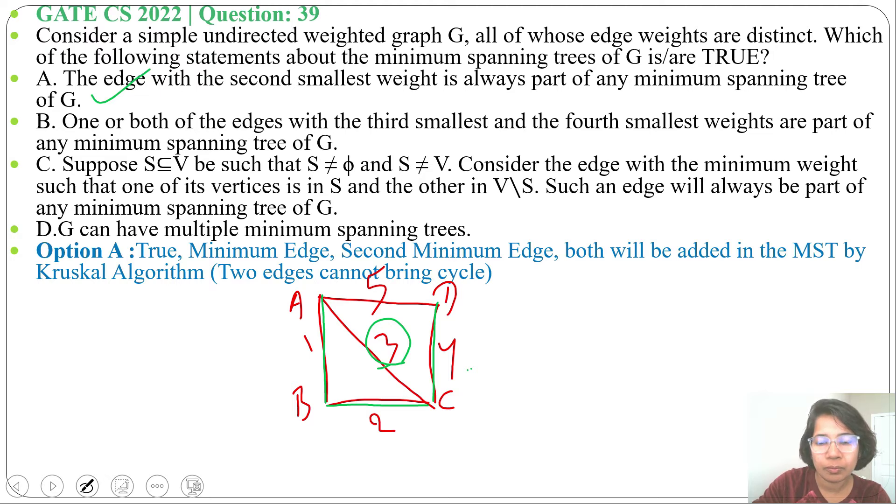So we include fourth smallest weight and we skip third smallest weight. Suppose this is a graph, then in minimum spanning tree will include 1 weight, 2 weight, 3 weight, 4 weight, and 5 weight. So here we are including both third smallest weight and fourth smallest weight. Option A is true, option B is true.